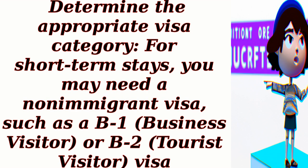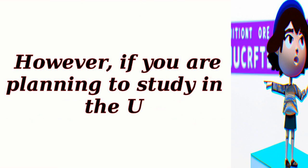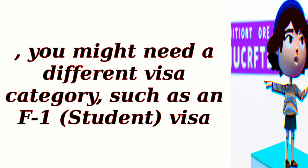Step 1: Determine the appropriate visa category. For short-term stays, you may need a non-immigrant visa, such as a B1 (Business Visitor) or B2 (Tourist Visitor) visa. However, if you are planning to study in the U.S., you might need a different visa category, such as an F1 Student visa.